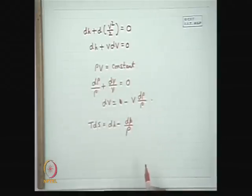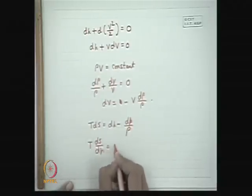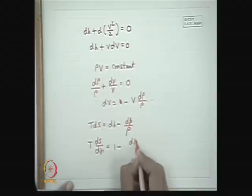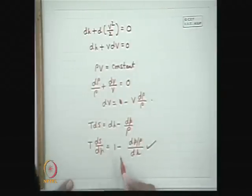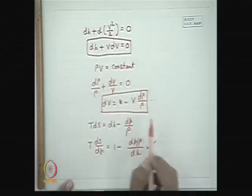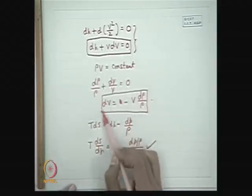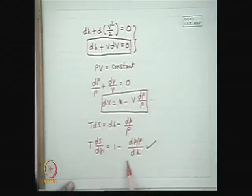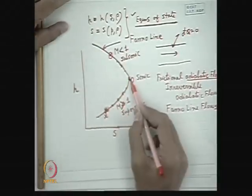To determine which part of the Fanno line is supersonic and which is subsonic: in the lower part of the curve, dS/dh is positive, which means (dp/rho)/dh is less than 1, so dp/rho is less than dh. The general expression is V² = dh·rho/d(rho). Since dh > dp/rho, we get V² > dp/d(rho), meaning V is greater than the acoustic speed — so this is the supersonic region, M > 1.